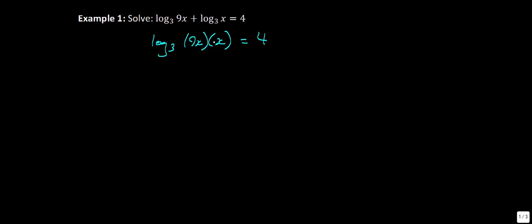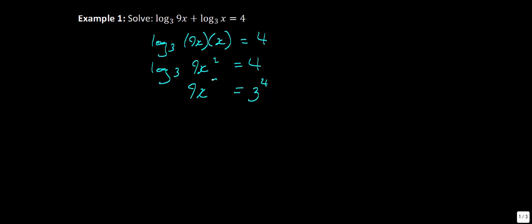9x times x gives me 9x squared. So we now have log base 3 of 9x² equal to 4. At this stage I'm going to change this into exponential form — this is saying 3 raised to the power of 4 is equal to 9x².